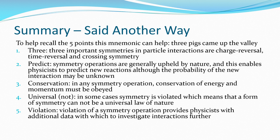Said another way, here's five sort of points. There's a little mnemonic here. Three pigs came up the valley to help you remember it. Three. There's three types of symmetries we spoke about. Charge, time and crossing. Pigs predict. It helps us predict these different interactions and the probability of new interactions may be unknown but we can still predict what is possible. Came up the valley. So conservation. There must be conservation of energy and momentum.